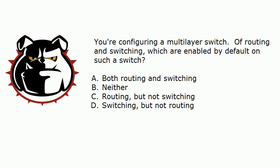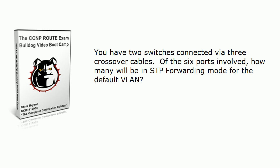For CCNA candidates, you're not going to be tested on multilayer switching in depth, but there are some basics you need to know and this is one of them. Of routing and switching, which of these are enabled by default on a multilayer switch? Is it both routing and switching, neither, only routing, or only switching?